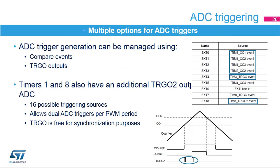This slide presents the ADC triggering options related to the timers. The ADCs can be triggered with most STM32 timers with three options. This can be done using compare events, where the ADC conversion will start on a given compare frame. The list of supported compare events varies from one timer to the other. The TRGO event can also be used on certain timers, giving extra flexibility since the TRGO can be any of the compare events or timer internal control signals such as register update, counter reset, or trigger input.